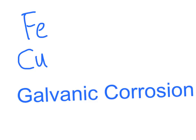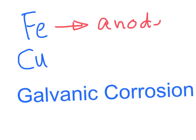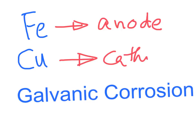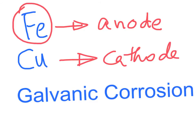In this galvanic corrosion between iron and copper, iron being the more active metal acts as the anode and loses its electrons, and copper acts as the cathode or the negative electrode. So therefore, iron undergoes severe corrosion.